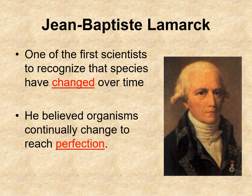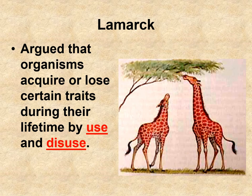There was also Jean-Baptiste Lamarck, who published his work before Darwin was born. He is one of the first scientists credited with recognizing that species changed over time. He believed that organisms actually meant to change — that organisms could make themselves change in order to reach what he thought was perfection. He argued that organisms could acquire or lose certain traits during their lifetime by use or disuse, which became known as acquired characteristics.